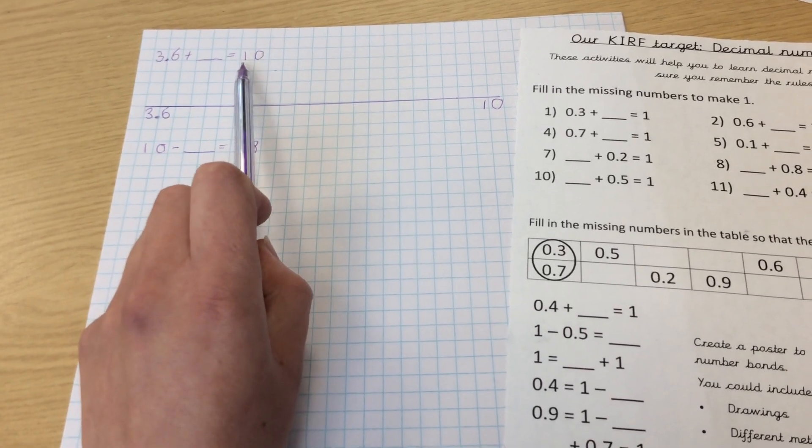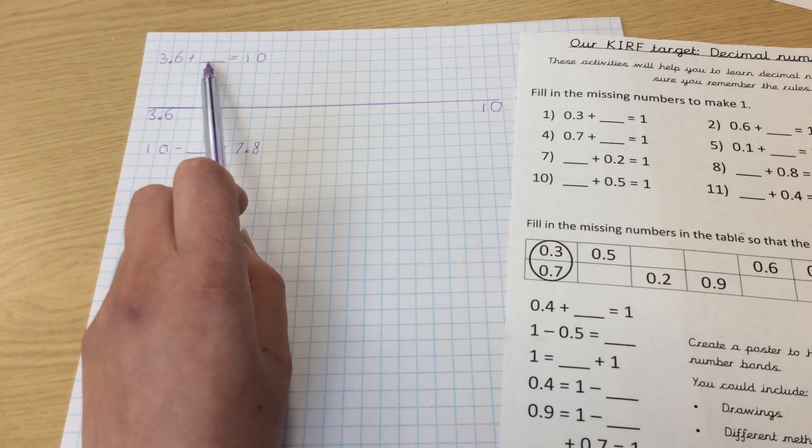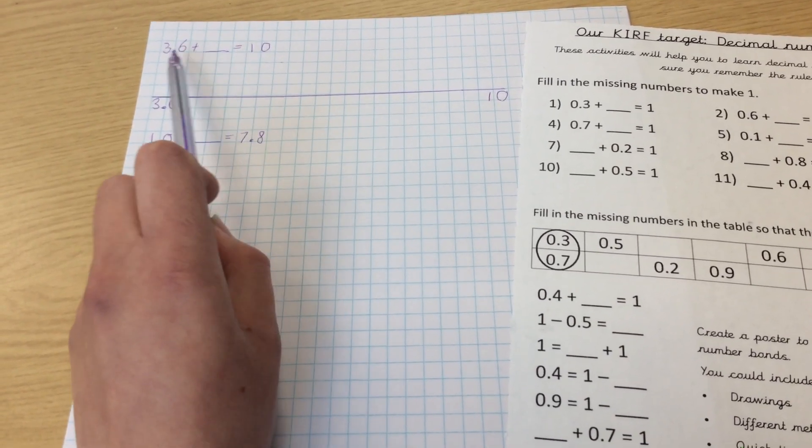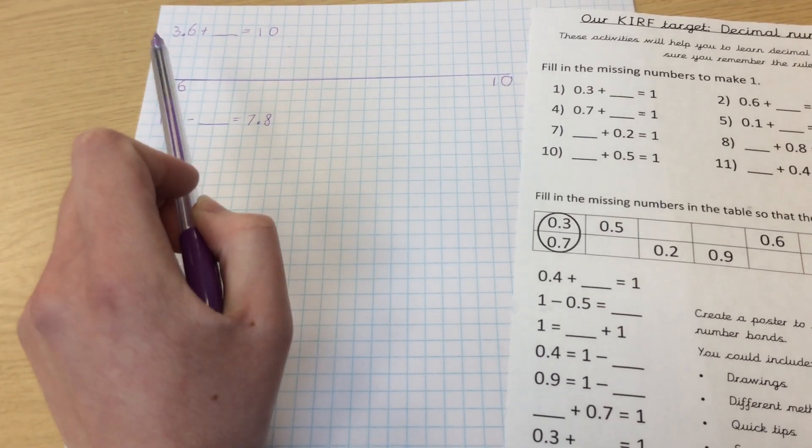So you would look at this as 36 and this as 100, and you would see what you needed to get to 100 from 36. So you do 100 subtract 36, and that would give you the missing number, and then put your decimal point back in.